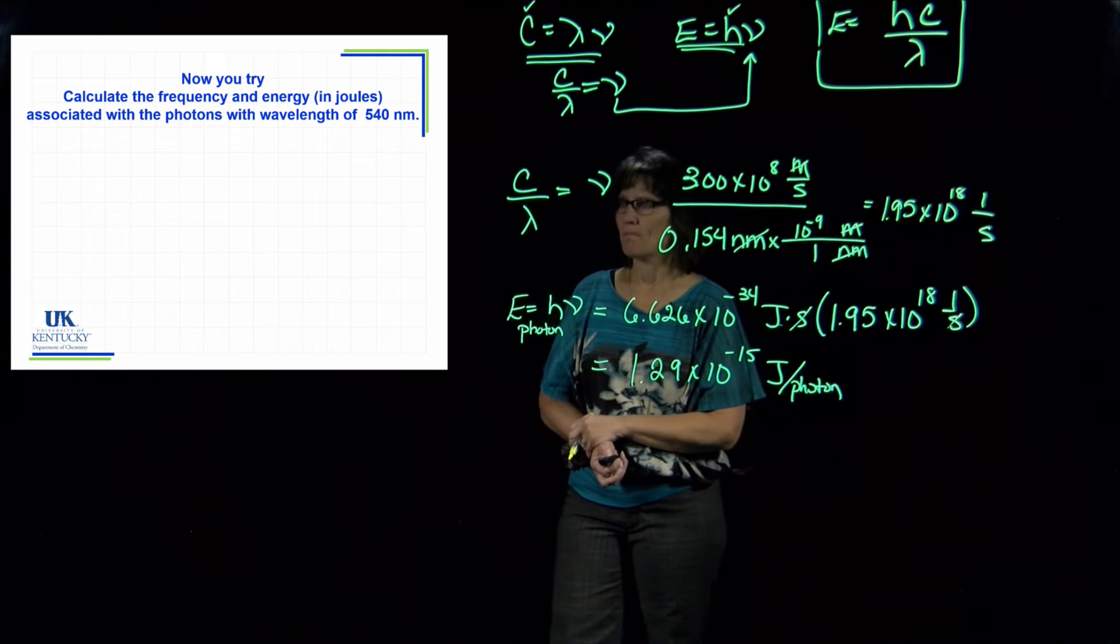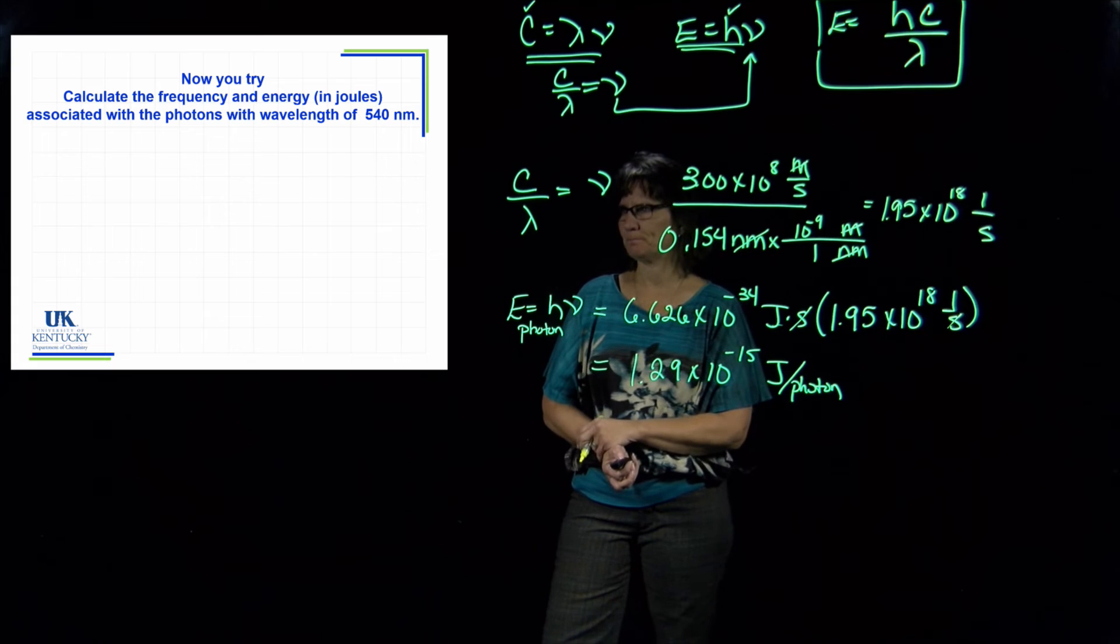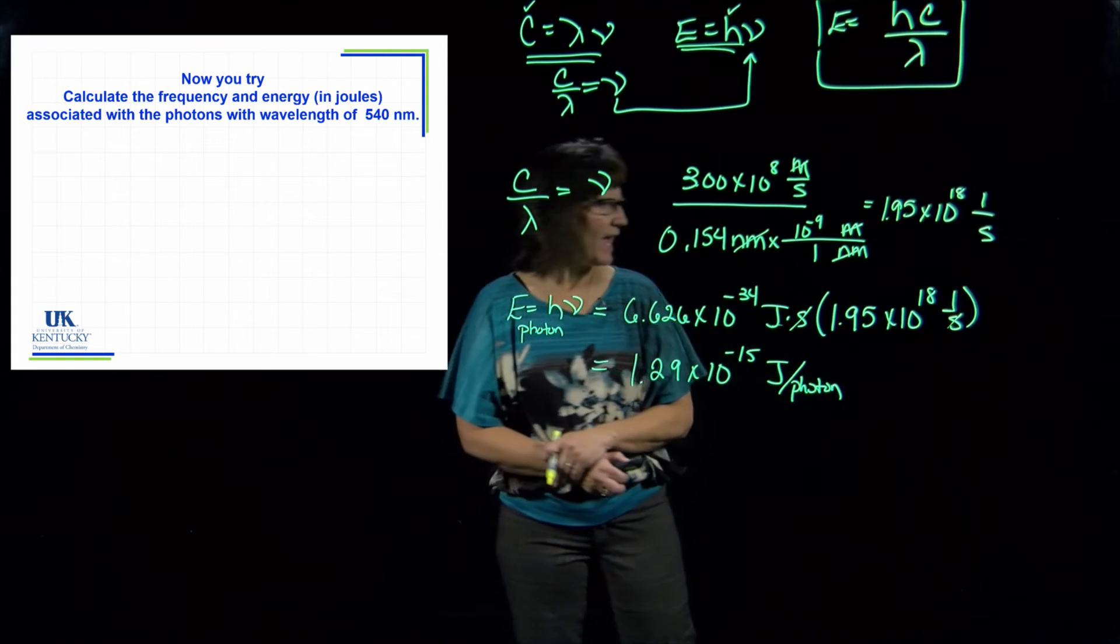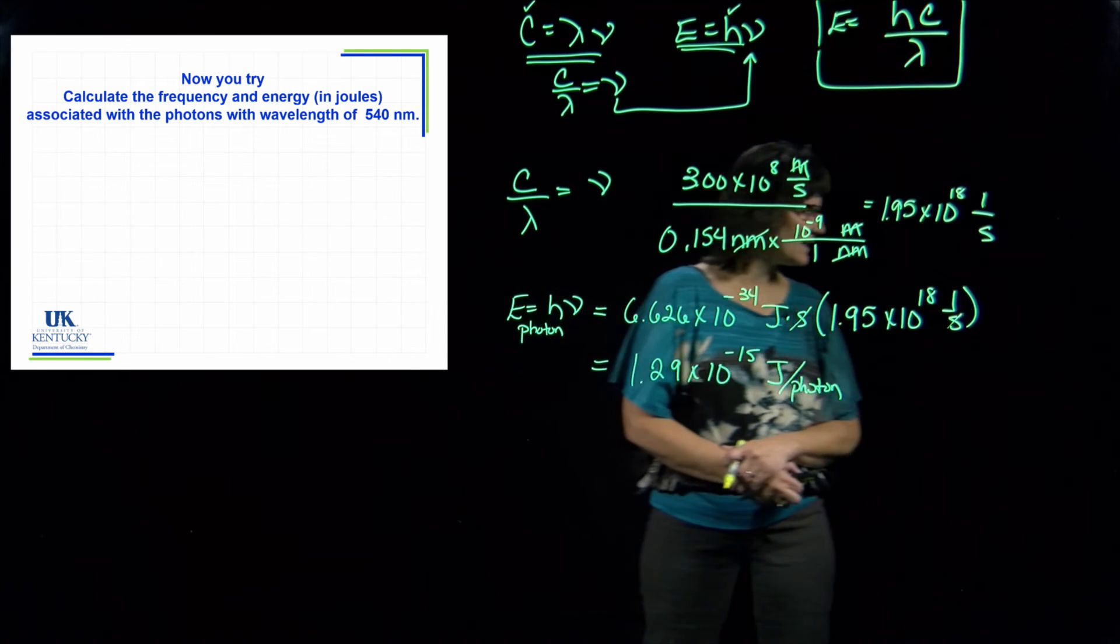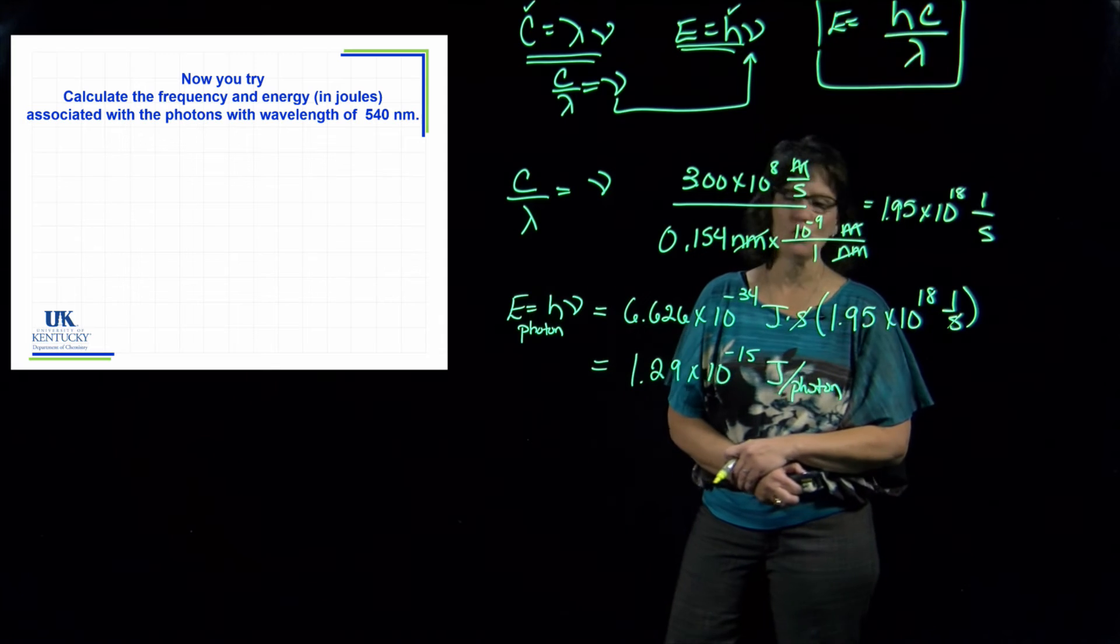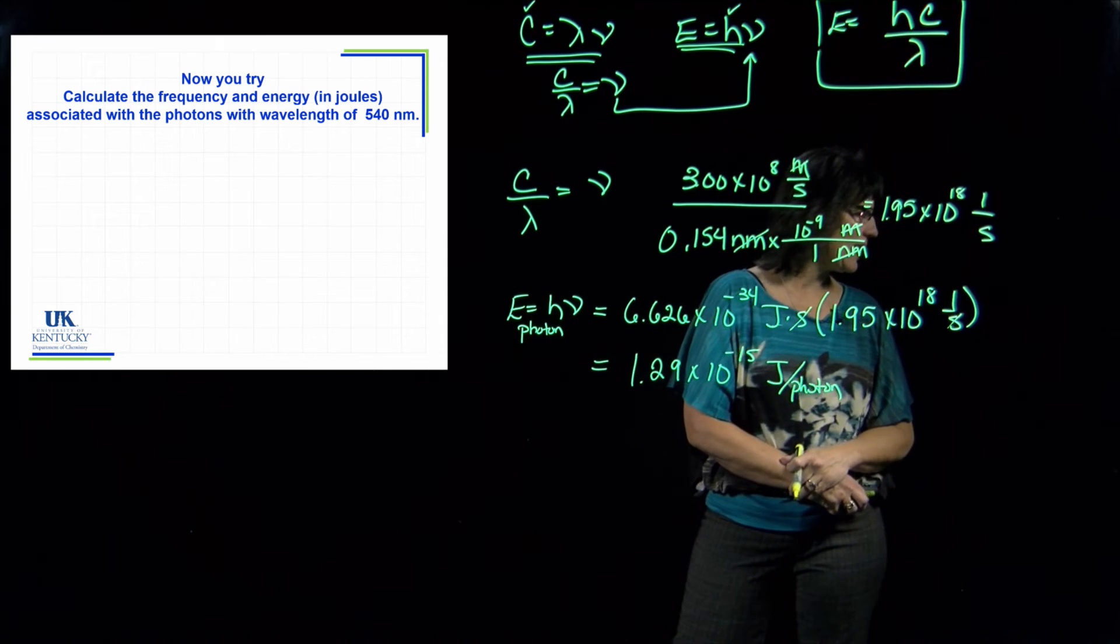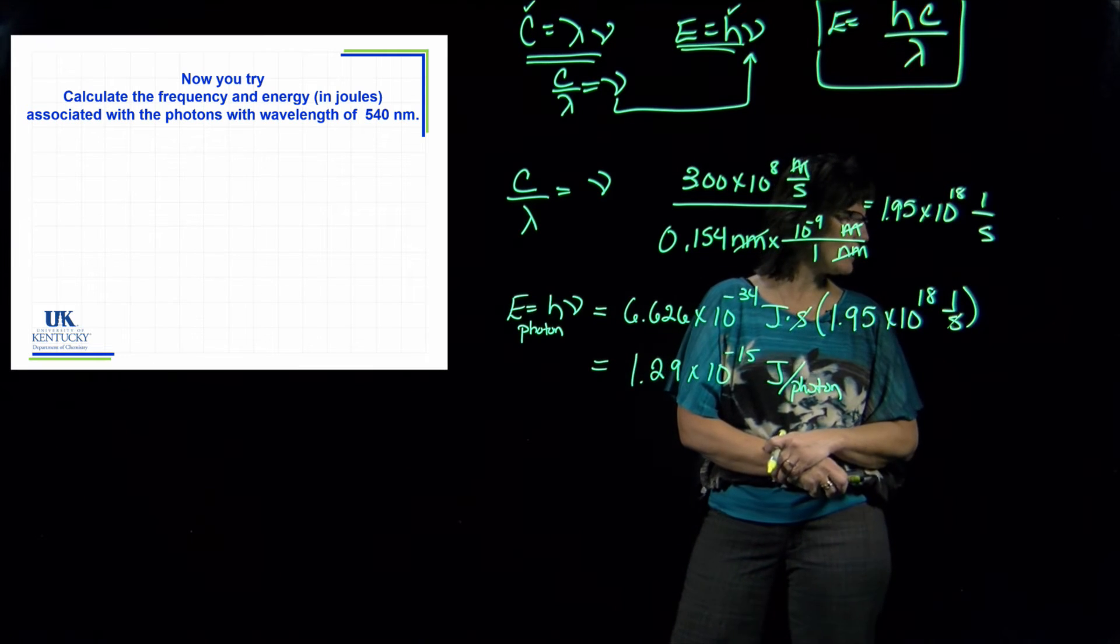Once you've answered that, then I will work with you some more on this. The answer that you would have obtained if you got it correct would be 3.68 times 10 to the minus 19 joules for the energy of that photon, and you would have obtained a value of 5.56 times 10 to the 14th for your frequency.